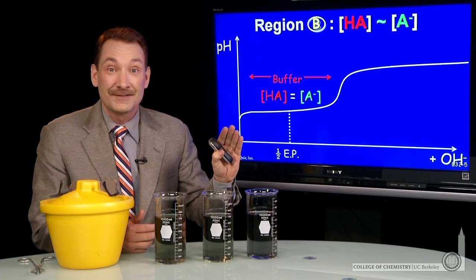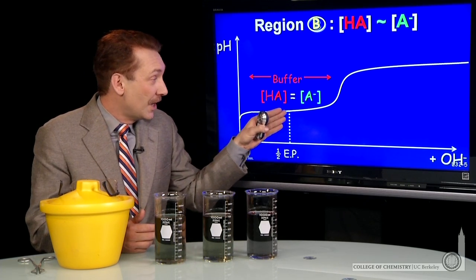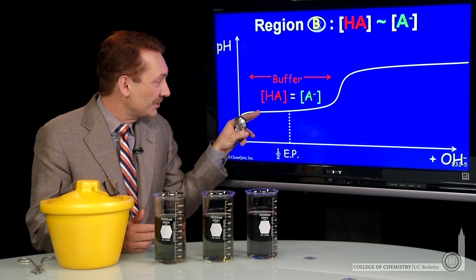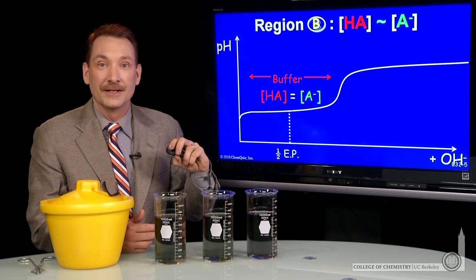At this point, the titration can continue, but the pH will change slowly, and the pH will change slowly prior to that point as well. Why is that?